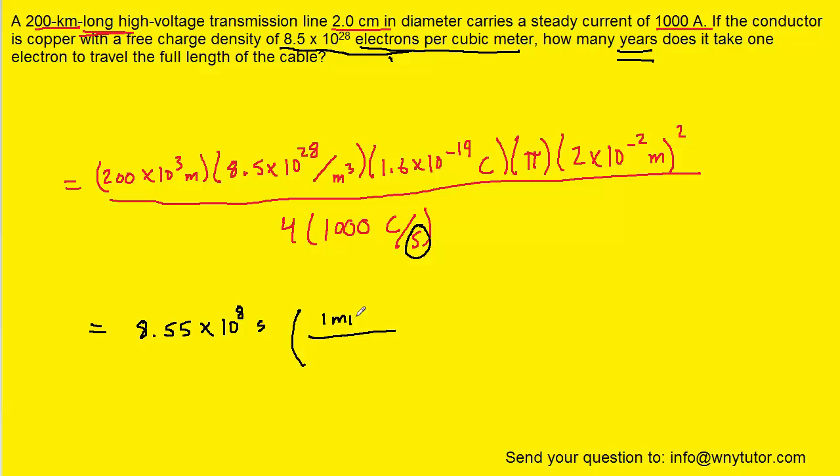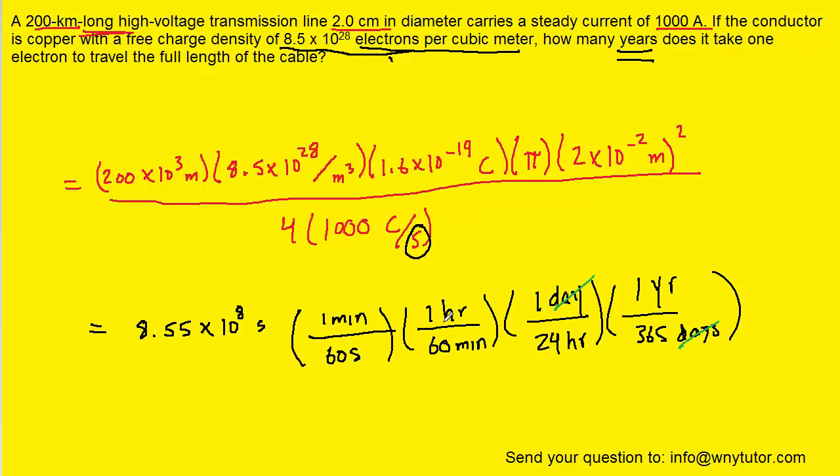We know that one minute is 60 seconds, one hour is 60 minutes, one day is 24 hours, and one year is roughly 365 days. If we set things up in that manner, the days cancel, hours cancel, minutes cancel, and seconds cancel. That leaves us with the answer in years. When we work that all out, we should get roughly 27.1 years. So this would be the correct answer to the question.